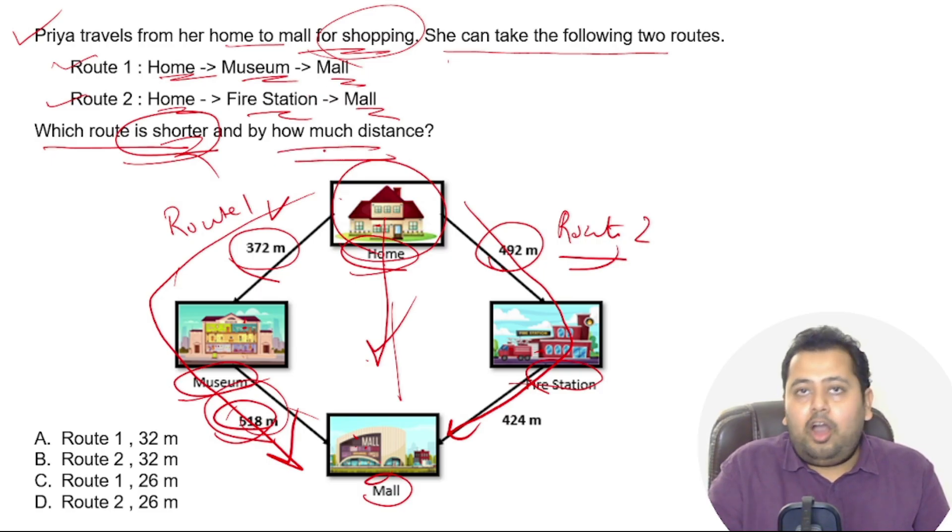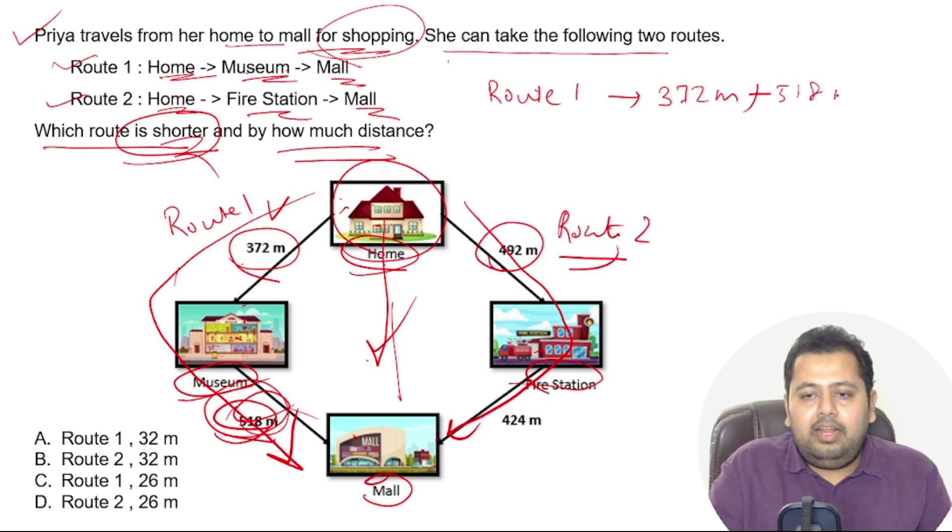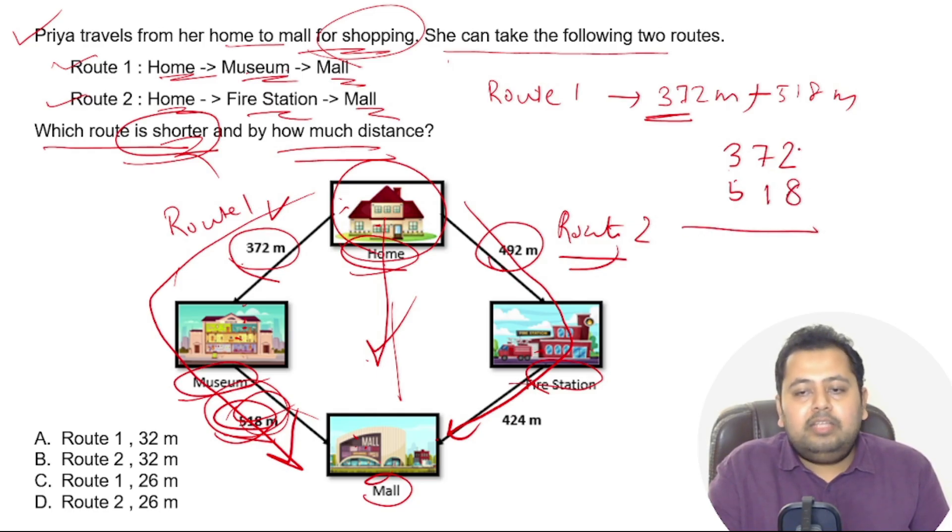If she takes route one, from home to museum and museum to mall, home to museum is 372 meters and museum to mall is 518 meters. So total distance that Priya will have to travel if she takes route one is 372 plus 518. 8 plus 2 is 10, so 0 comes here, 1 gets carried over, 7 plus 1 is 8, 1 is carried over, this will be 9, 3 plus 5 is 8. So she is traveling 890 meters if she takes route number 1.